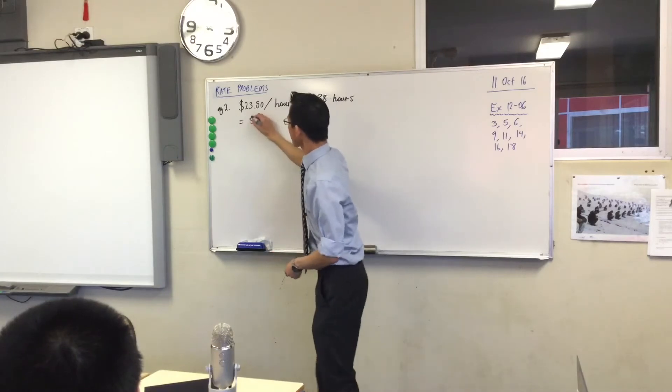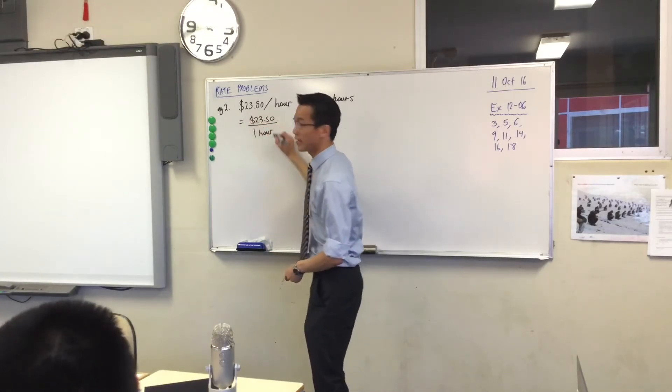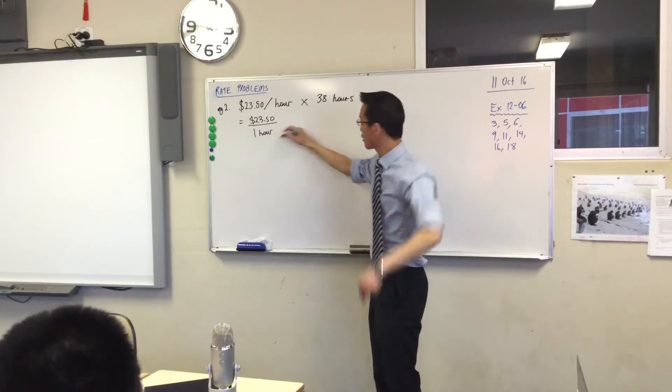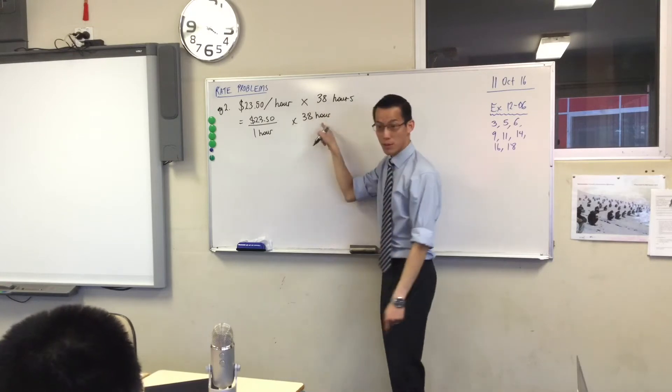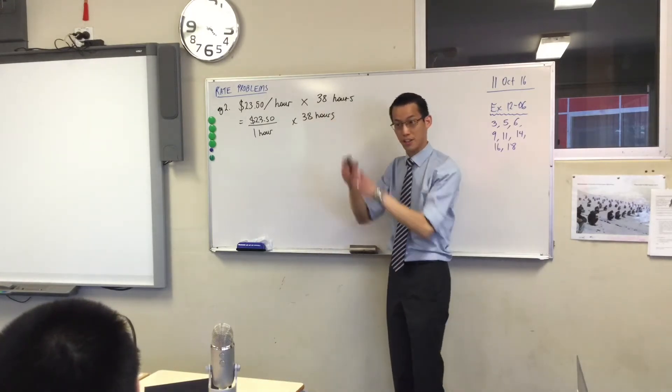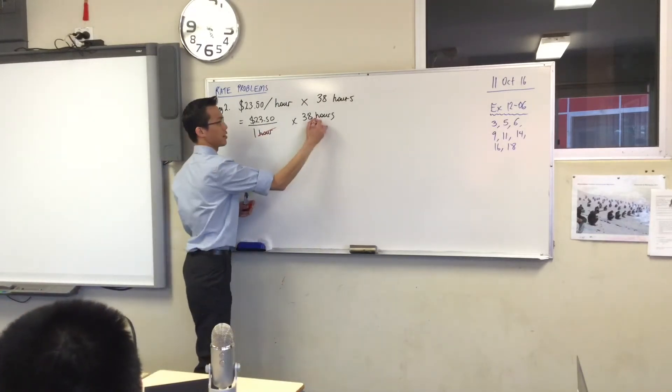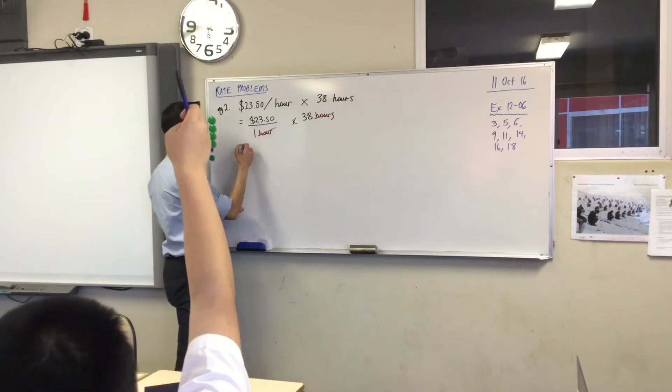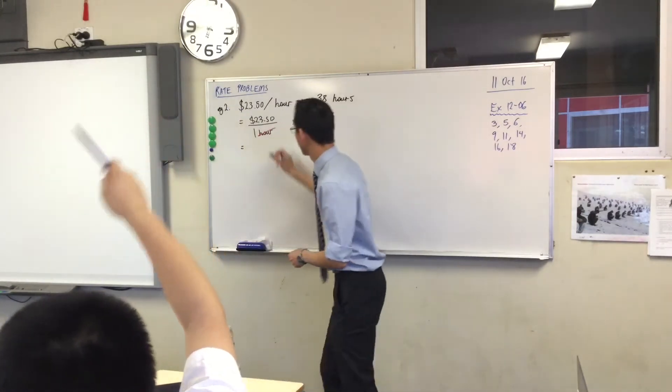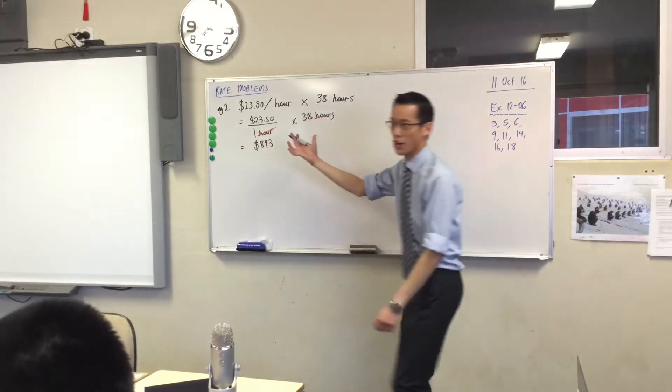So therefore, I don't know if you've written it like this, which shows the extra working. This is an hour on the bottom of the fraction, and this is the same unit on the top of the fraction. So if I use multiplication, then I can cancel, cancel, and can someone tell me what the value is? Has someone already calculated it? Yeah, Will. 893. Exactly? Yeah. Okay, there you go.